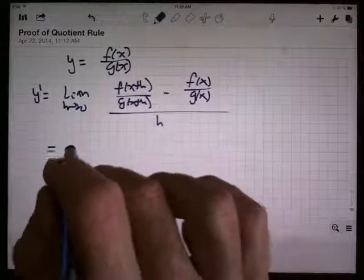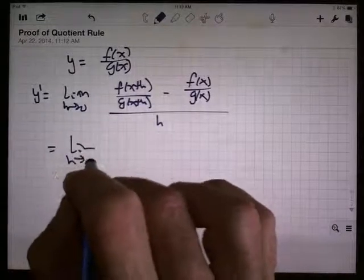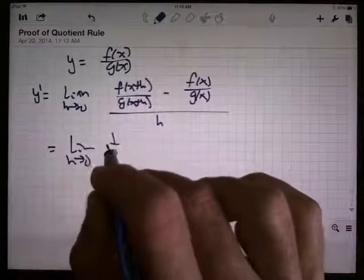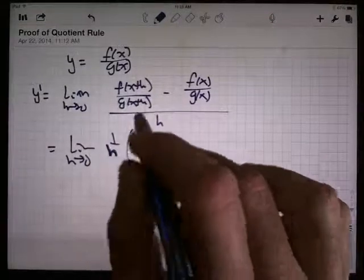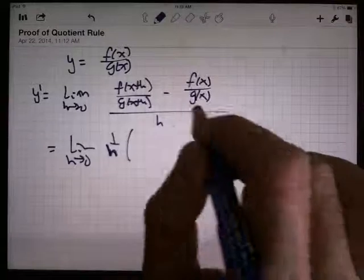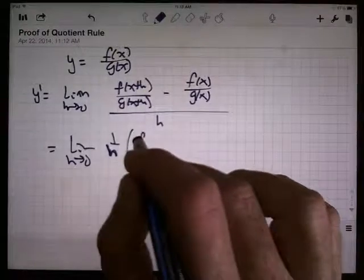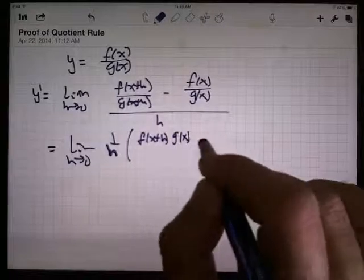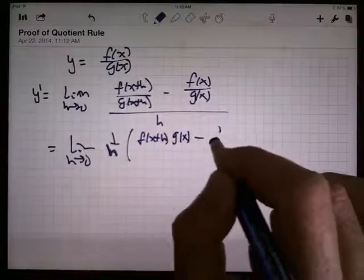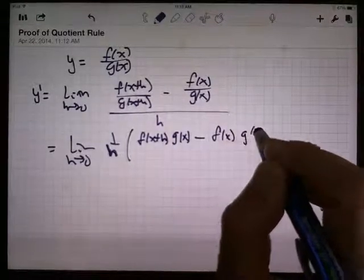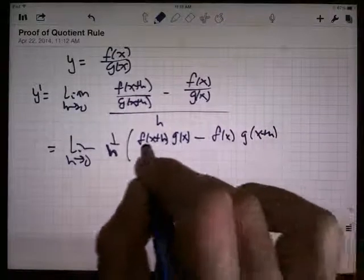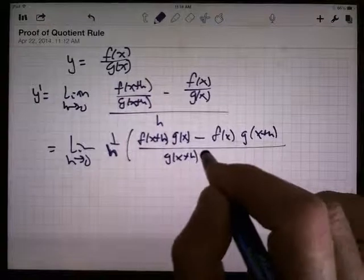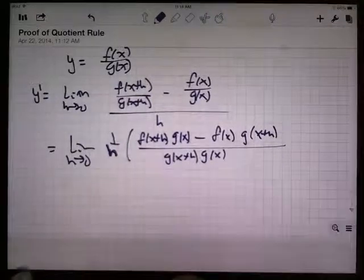Let's write the 1 over h out in front. Then let's get a common denominator. So I've got f of x plus h times g of x minus f of x times g of x plus h, all over g of x plus h times g of x.